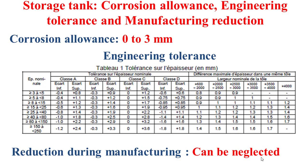For the corrosion allowance, it ranges from 0 to 3 mm, based on the corrosivity of the coupled storage fluid and material of the tank, as well as the nature of the anti-rust and paint coatings. It is very important to note that this corrosion allowance is determined based on an agreement with the customer.